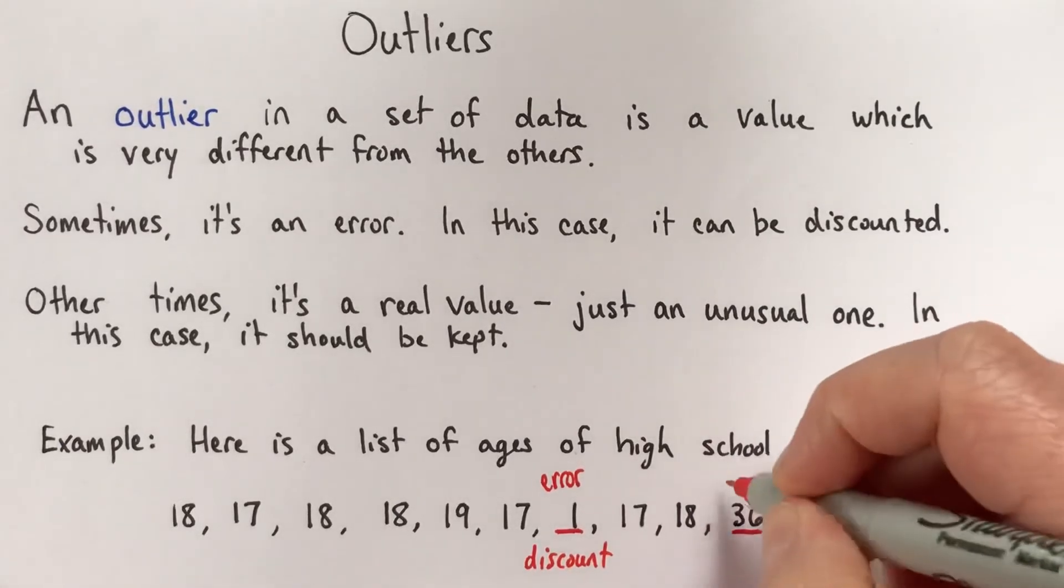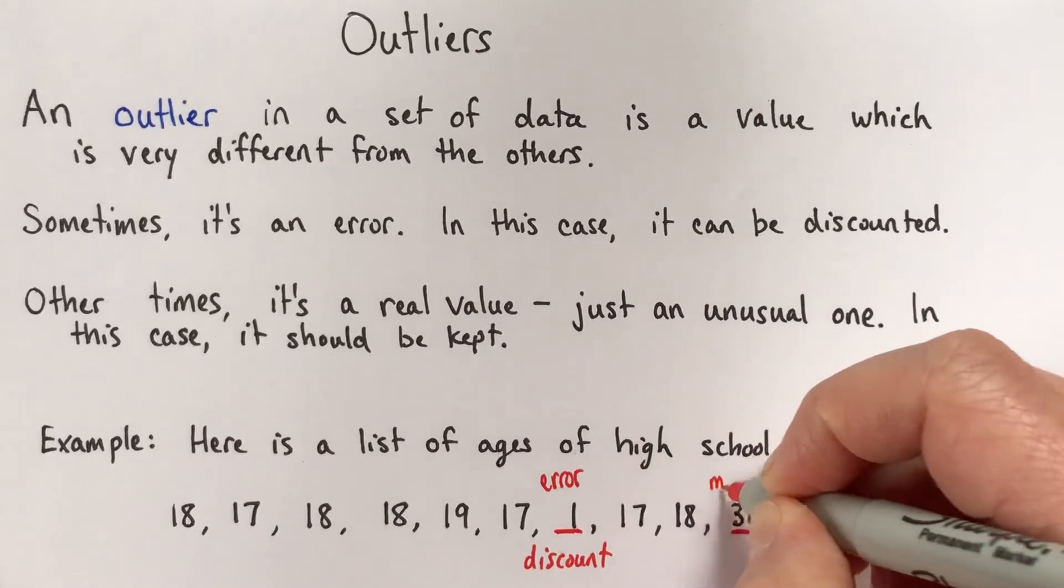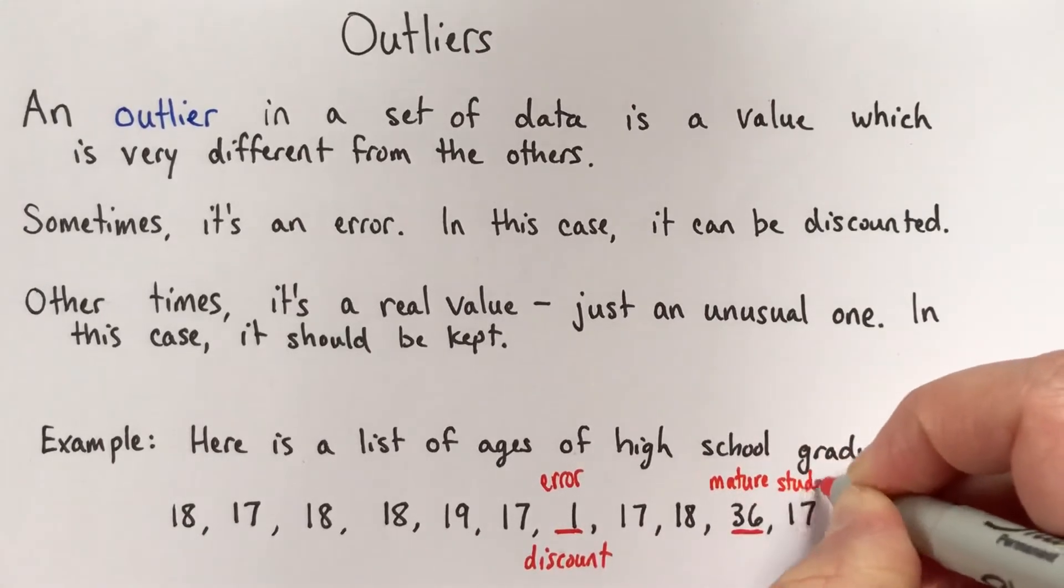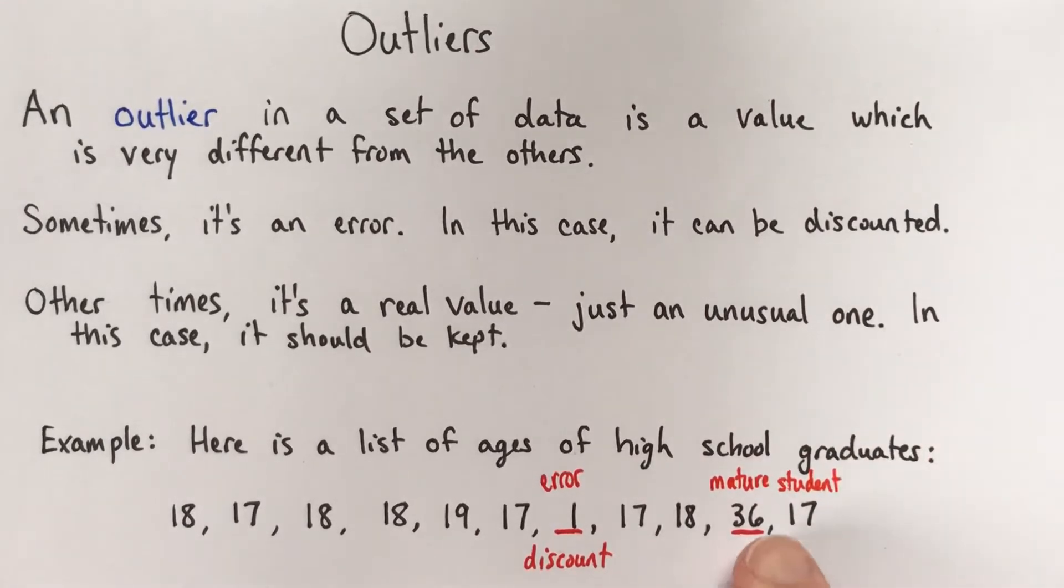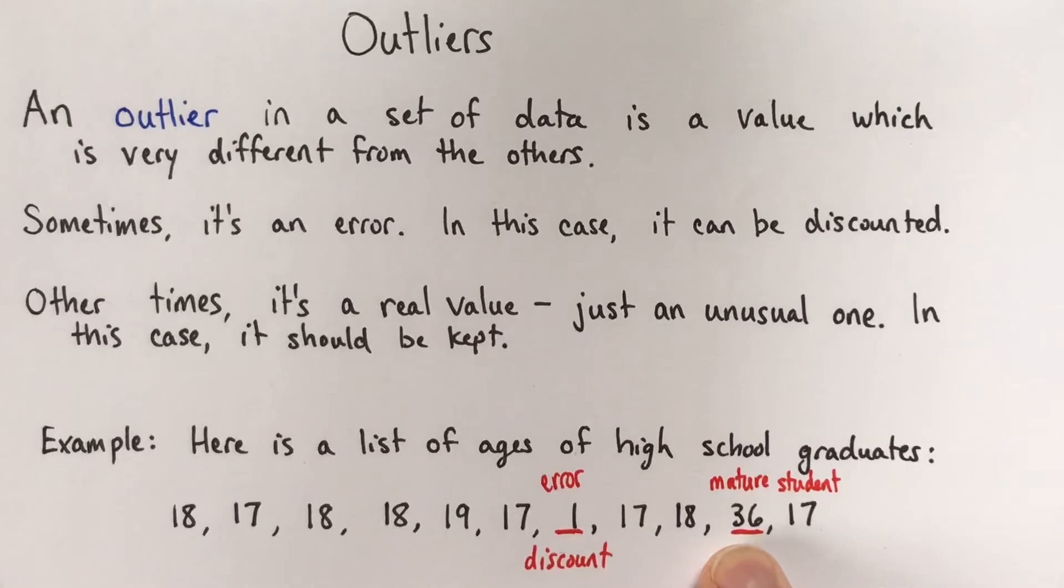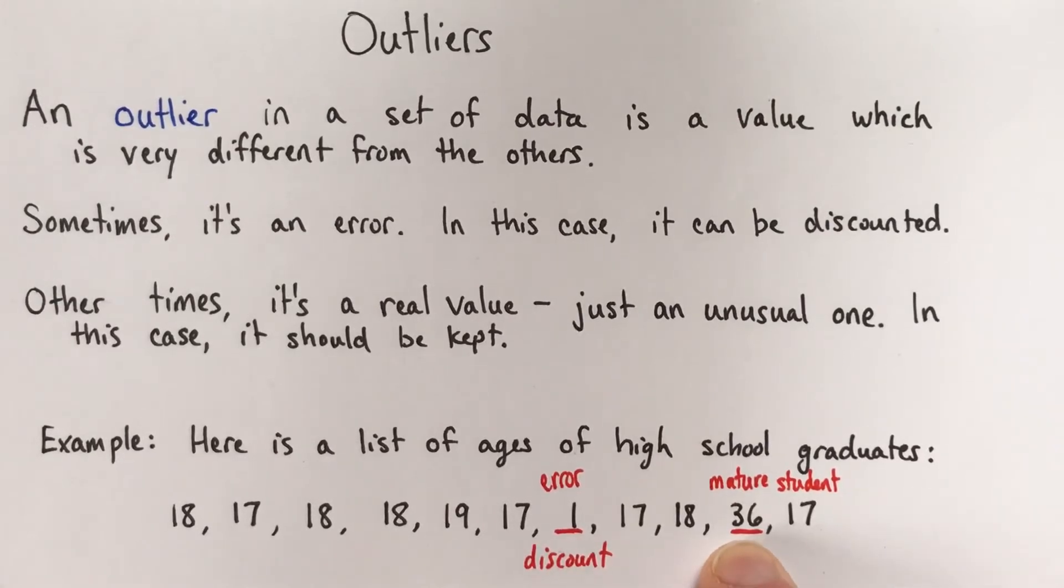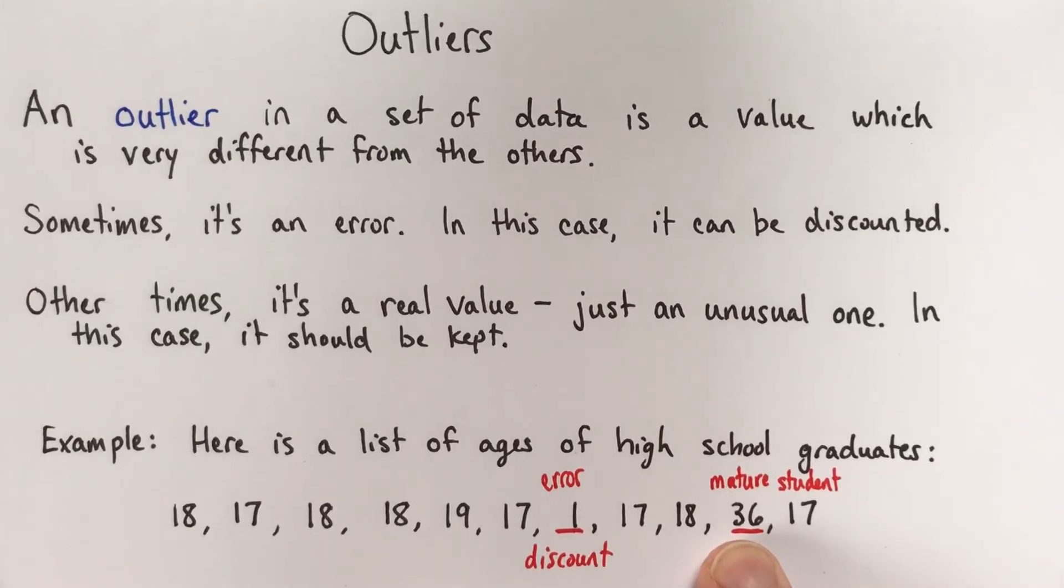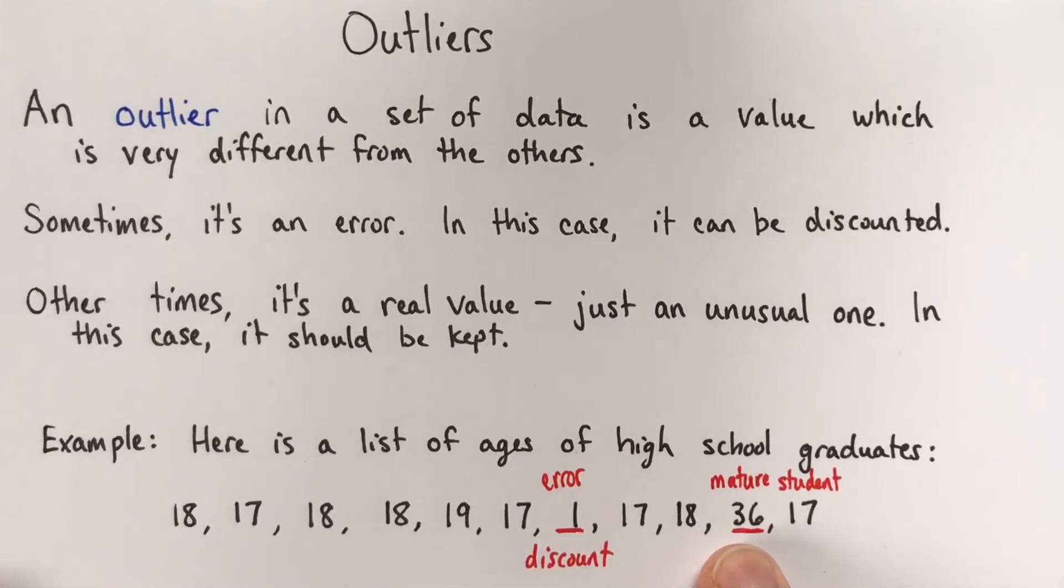Now this 36, this 36 is not an error. This is just a mature student. So this is someone who didn't finish high school when they were 17 or 18 or 19, and then they went back later and they finished it when they were 36. So compared to the other students on the list, this is an unusual age. But this is a valid age, this is real, this really happened.